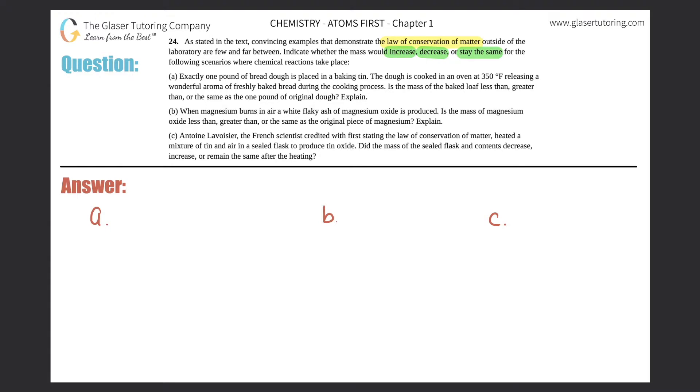So the first thing I see here is A, B, and C. I'm just going to write this A, B, and C. Now let's see what's going to happen. For letter A, it says exactly one pound of bread dough is placed in a baking tin.